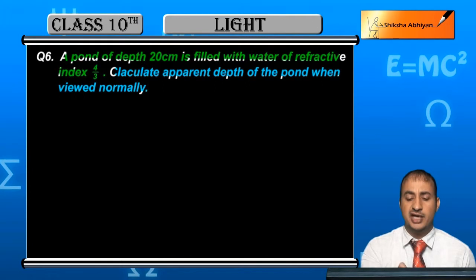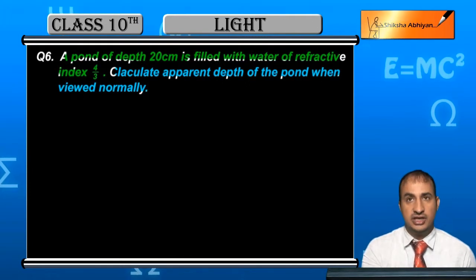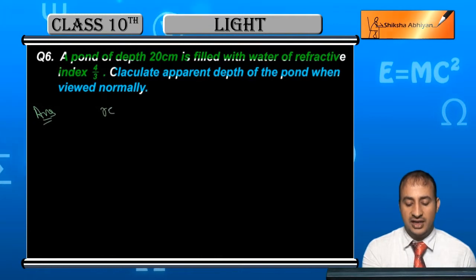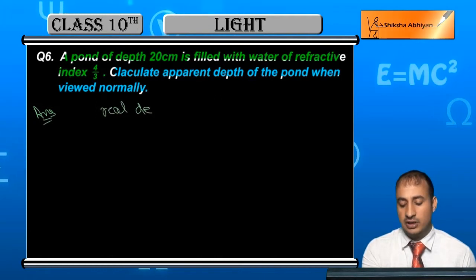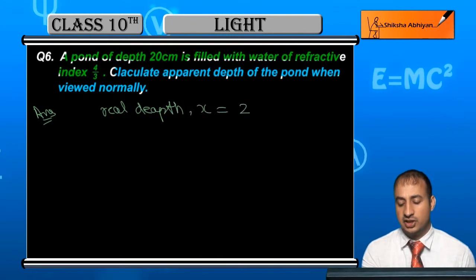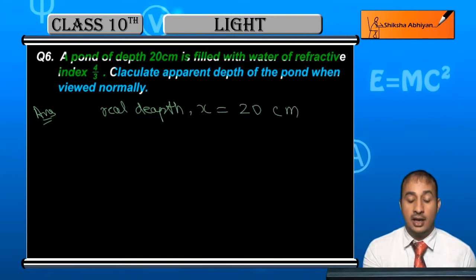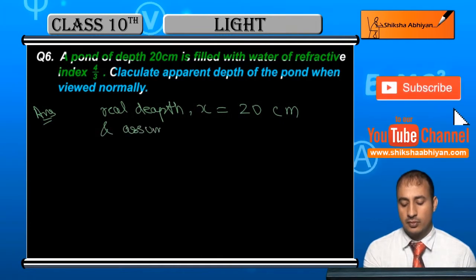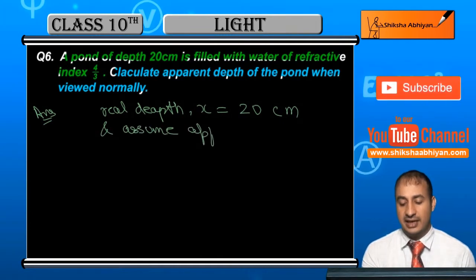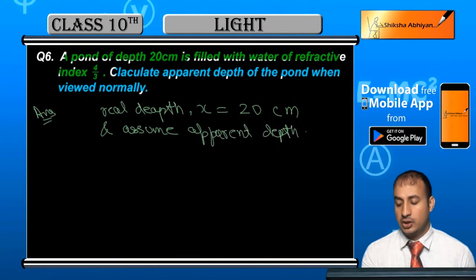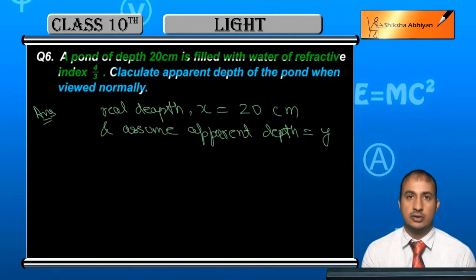To find the apparent depth of the pond, we have to write the real depth. Real depth is equal to 20 cm. And let's assume apparent depth is equal to y.